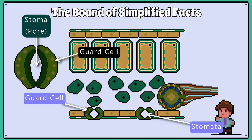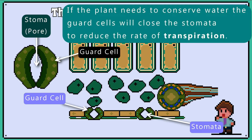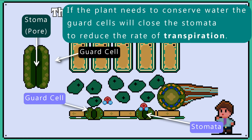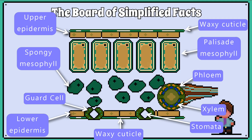For example, if the plant needs to conserve water the guard cells will close the stomata to reduce the rate of transpiration. In the next lesson we'll take a closer look at the xylem and transpiration in plants.